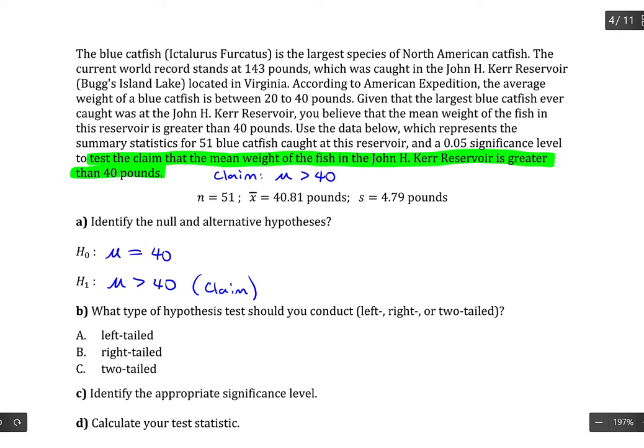It's becoming more common, however, to just put equals in the null. It doesn't make any difference in how you perform the test in the end. Now, what type of test should you conduct? Left tail, right tail, or two tail? Well, the symbol in the alternative is a greater than. And if you think of that as an arrow, it would be pointing to the right. So that helps us identify this as a right tail test. If it had been a less than, it would be a left tail test. And if it was not equals, it would have been a two tail test.